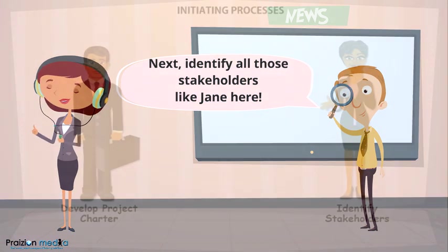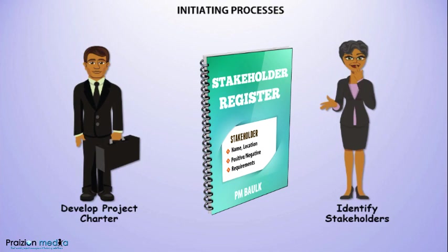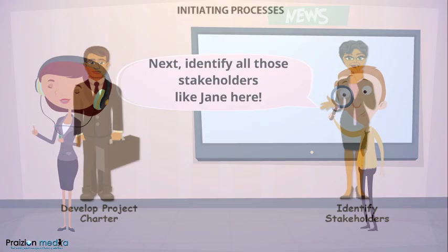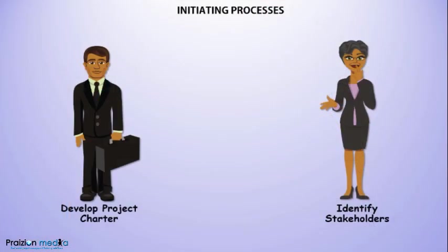Identify Stakeholders is our next process, where stakeholders are identified and analyzed. This is not a one-time event — it happens all throughout the project. The major output is called a Stakeholder Register. As part of analyzing stakeholders, the project manager should look at their level of power, interest, and influence, and probably determine their attitude — hence the Stakeholder Cube, which analyzes attitude, power, and interest.